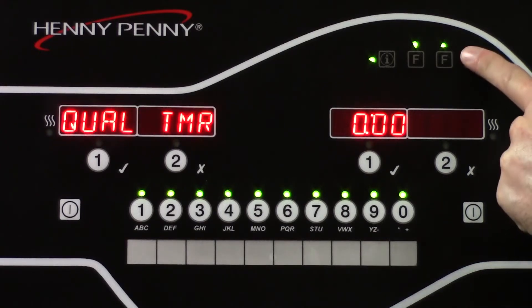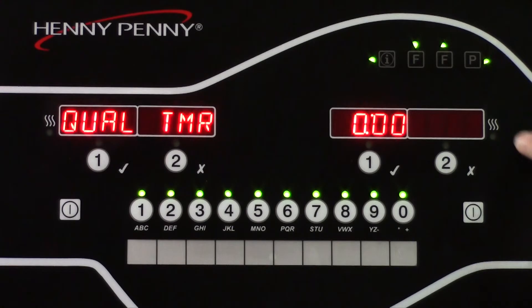For this example, we are going to leave the quality timer at zero. But the quality timer is a timer that starts counting down as soon as the product is done when the timer is canceled. The quality timer indicates how long the product can be held before it would need to be discarded. For example, some stores may set the quality timer in fries to 7 minutes, which means that if the fries don't sell in 7 minutes, they would need to be discarded.